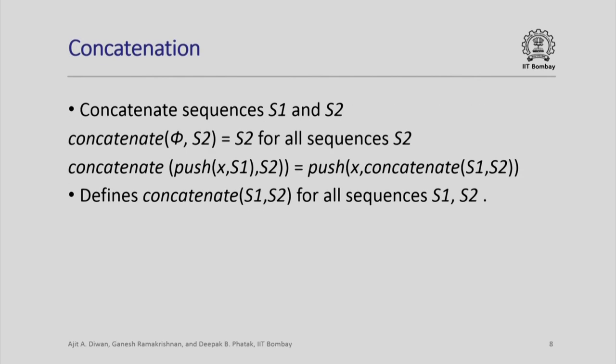Here is another operation on sequences which is needed frequently: concatenation of sequences, which means that if I have a sequence s1 and s2, I construct a new sequence consisting of s1 followed by s2. If s1 is empty, then concatenate phi comma s2 will always be the sequence s2 for any sequence s2 — concatenating anything to an empty sequence gives that sequence. On the other hand, concatenating push x s1 comma s2 is: I concatenate s1 and s2 first and then push x into it. Adding x to s1 and then appending s2 to it is essentially equivalent to concatenating s1 and s2 and then pushing x into the resulting sequence.